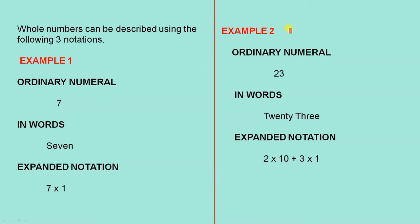Let's look at some other numbers. The next example, as an ordinary numeral, we have 23. In words, twenty-three. In expanded notation, this actually explains the meaning of 23. The three is in the ones column, the two is in the tens column, so it's two times ten plus three times one.